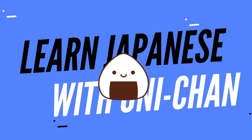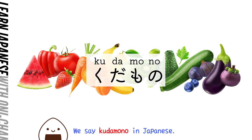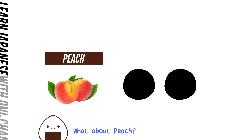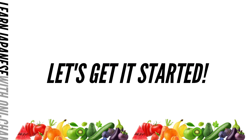Learn Japanese with Oni-chan. Question: How do you say fruit in Japanese? We say it in Japanese. What about peach? Momo — momo is peach. Let's learn the names of other fruits in Japanese. Let's get it started!